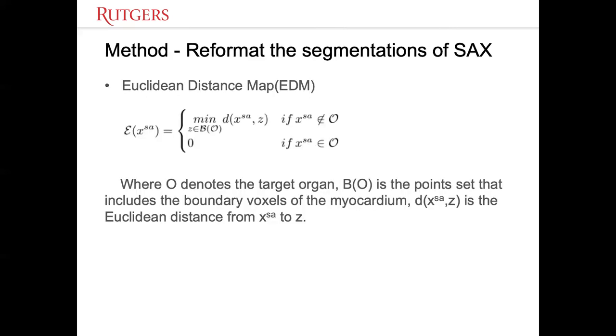Now we'll introduce our method. We reformulate the segmentation of the short axis images first. The Euclidean distance map is defined as follows.